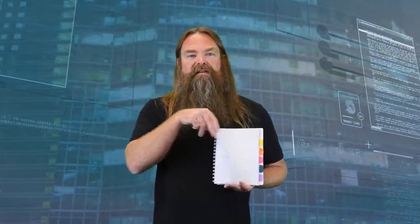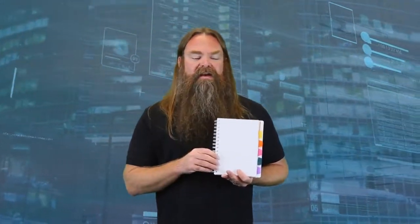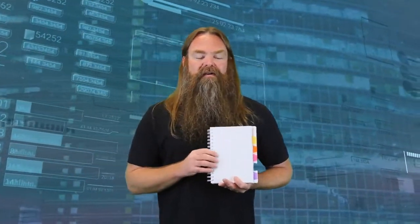What makes this blockchain notebook incredibly powerful is that all the pages are linked together, so that if I go back and try to change any data on any page anywhere in this notebook, I break a link in a very obvious and easy-to-determine way. This gives blockchain a key property known as immutability, and it's what gives blockchain the security that we've come to know and depend on.